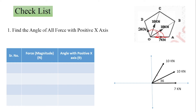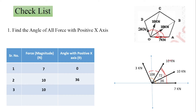The next force is 10 kilonewton. Since each sub-angle is 36 degrees, the total angle is 36 plus 36 equals 72 degrees. The last force, 3 kilonewton, has an angle of 72 plus 36 equals 108 degrees. So in the table: force 1 is 7 kN at 0°, force 2 is 10 kN at 36°, force 3 is 10 kN at 72°, and force 4 is 3 kN at 108°. That completes step one.